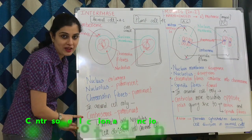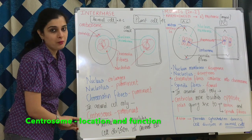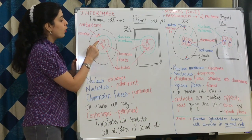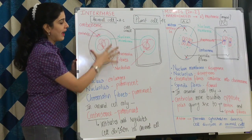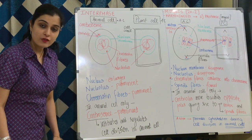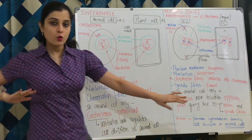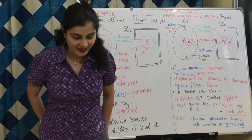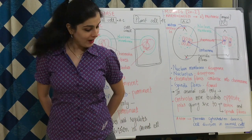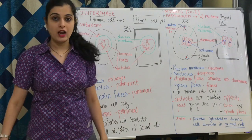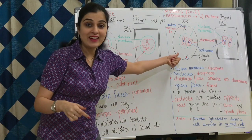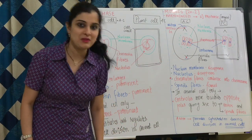Centrosome — this is a board question: location and function. Location: it is a darkly stained body with two centrioles, close to the nucleus in the cytoplasm of animal cell. Function of centrosome or centriole is to initiate and regulate cell division in animal cell. Don't get confused between centrosome and chromosome. Chromosomes are the genetic material. Centrosome is a cell organelle found in animal cell only.